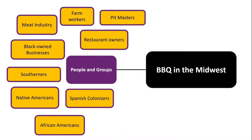For my topic, I'll group ideas related to the names of people and organizations associated with this topic. I'll add terms like meat industry, African Americans, and restaurant owners.